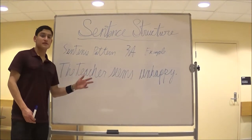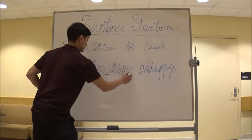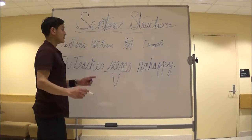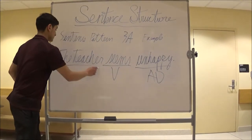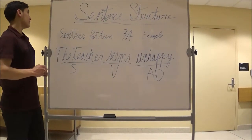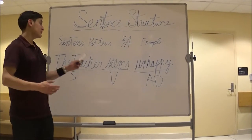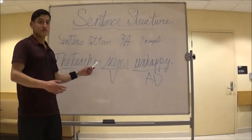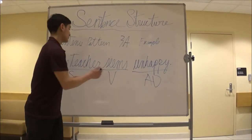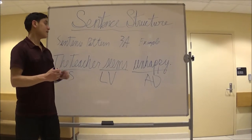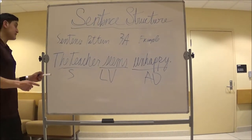Now we have sentence pattern 3a. The example is: the teacher seems unhappy. We underline 'seems' as the verb. Unhappy is an adjective, and the subject is the teacher. With sentence pattern 3, we start using linking verbs — a verb that does not show action. Unlike running and chasing, 'seems' is more of a passive verb. Unhappy is the adjective, so this makes it an adjective complement.